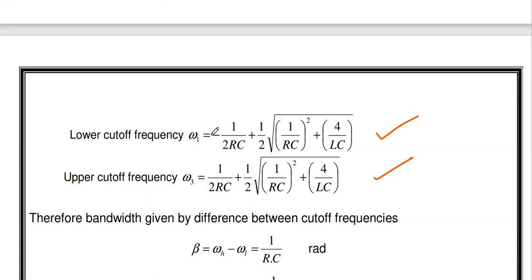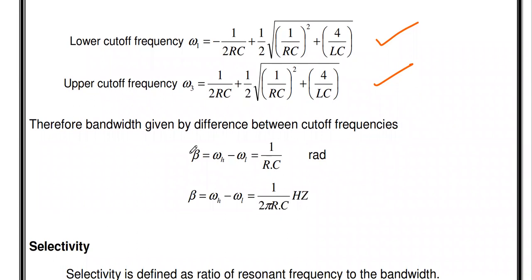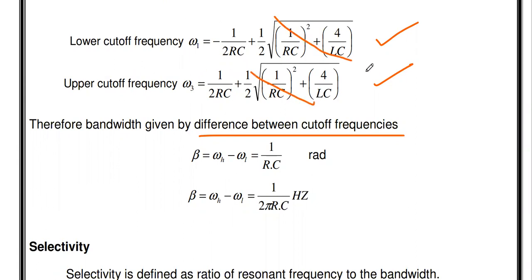The upper cutoff frequency is ωH = 1/(2RC) + (1/2)√[1/(RC)² + 4/(LC)], and the lower cutoff frequency is ωL = −1/(2RC) + (1/2)√[1/(RC)² + 4/(LC)]. Subtracting: BW = ωH − ωL. The square-root terms cancel, leaving BW = 1/(2RC) − (−1/(2RC)) = 2·(1/(2RC)) = 1/(RC). So the bandwidth of the parallel RLC circuit in radians is 1/(RC).